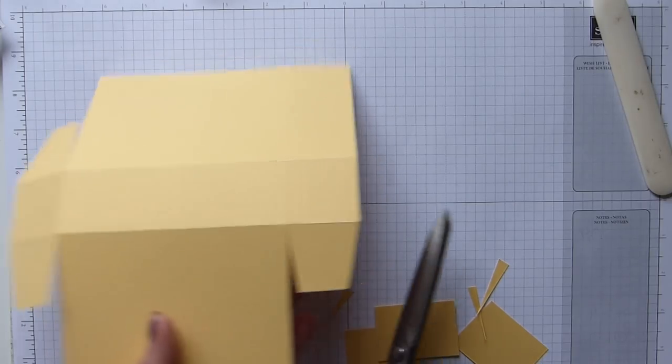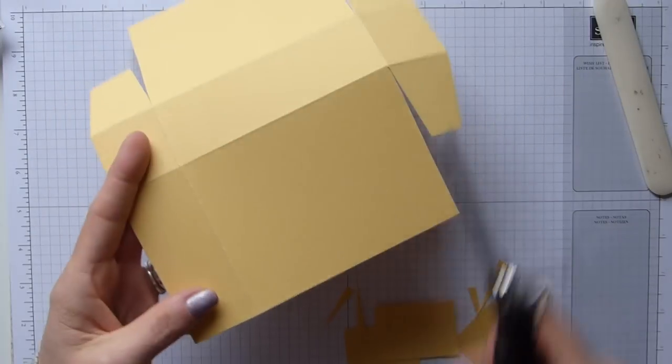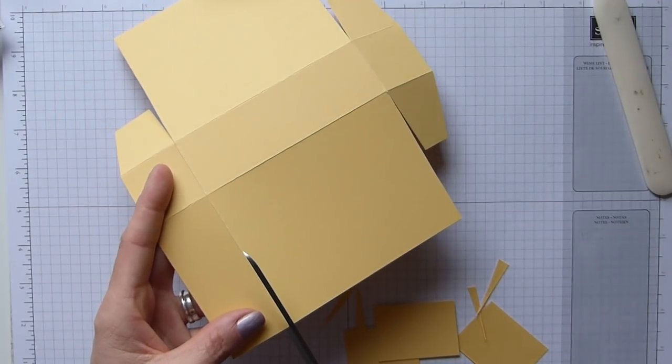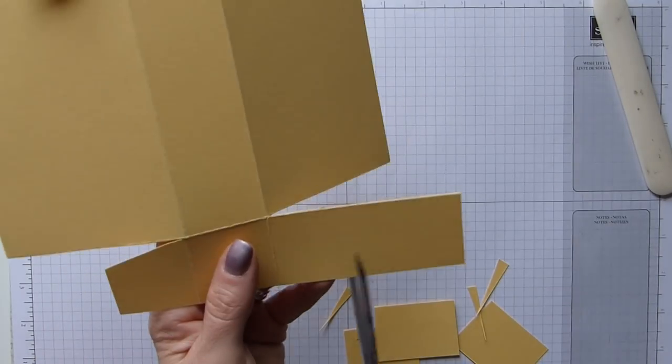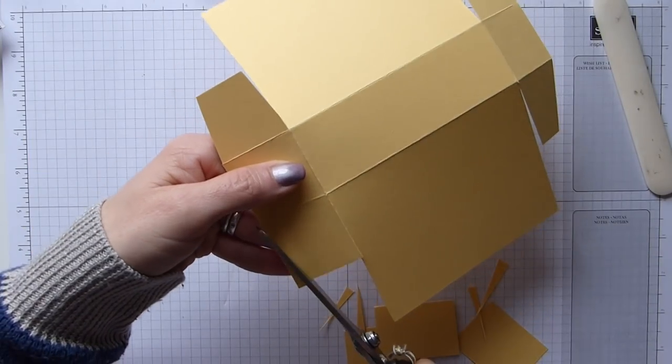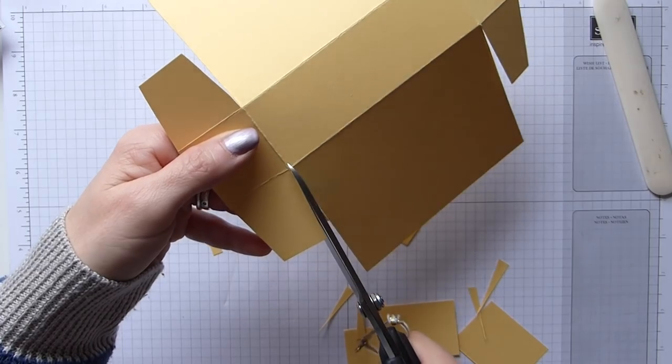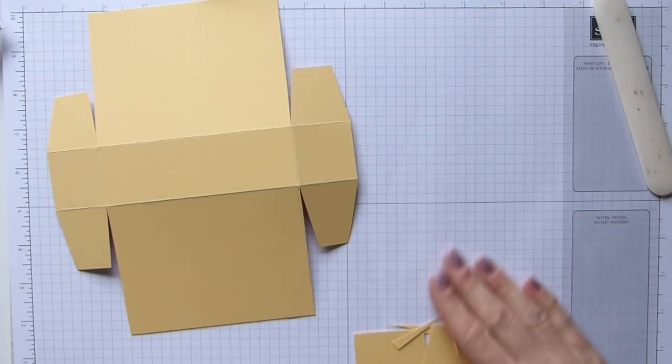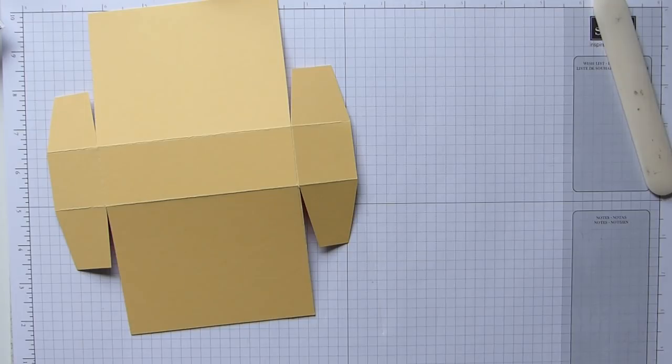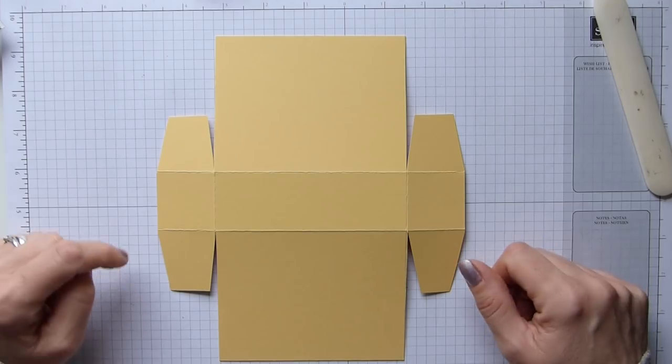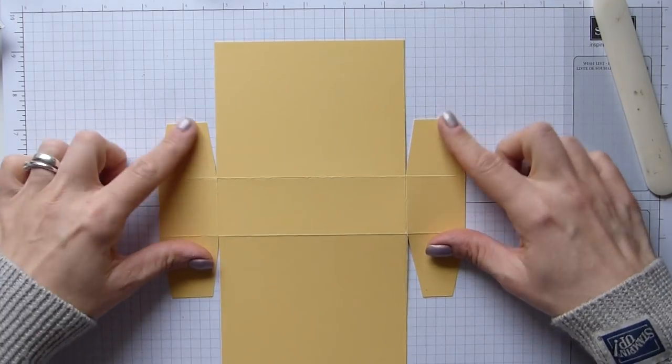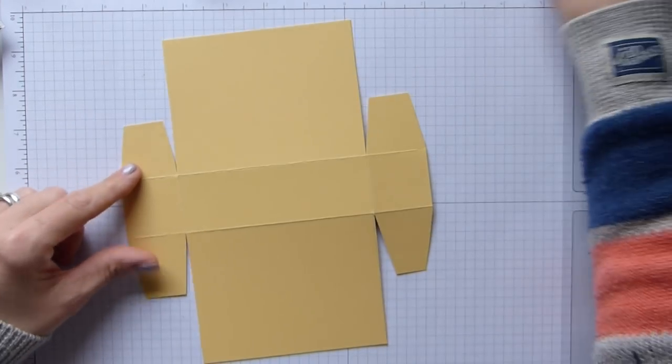So just cut those wedges. And then the same with this side, cut all the way down and then halfway across from creating those wedges. So we'll get rid of that bit of rubbish. That's what we're left with.